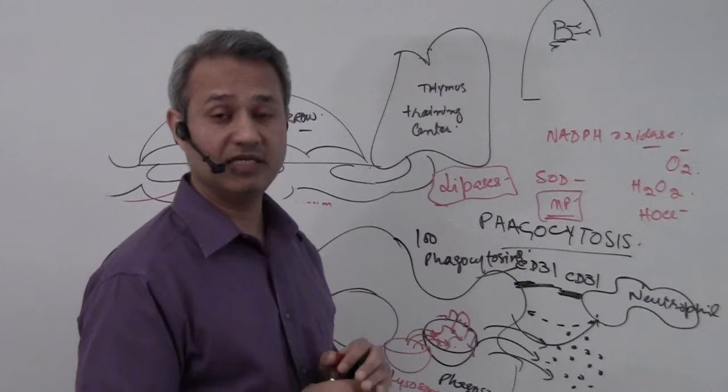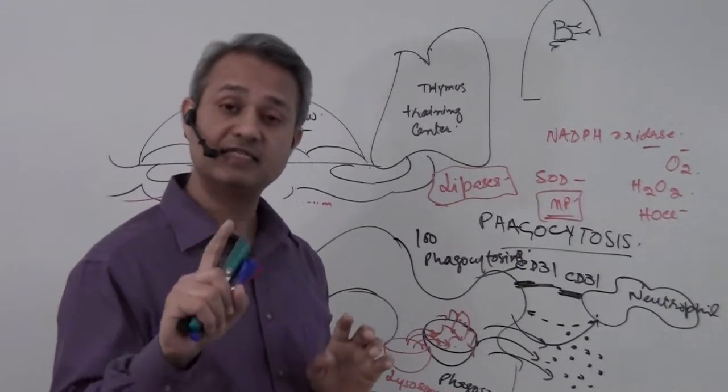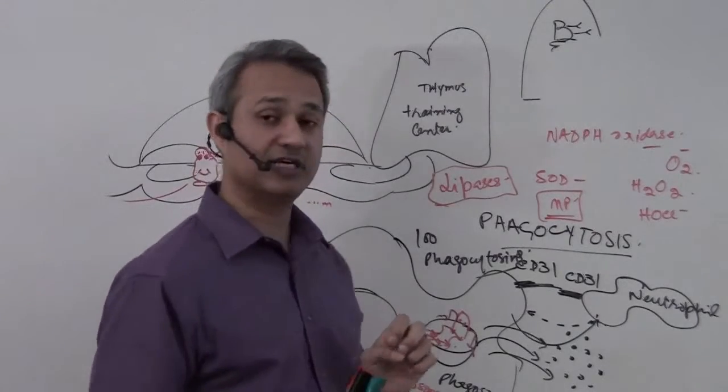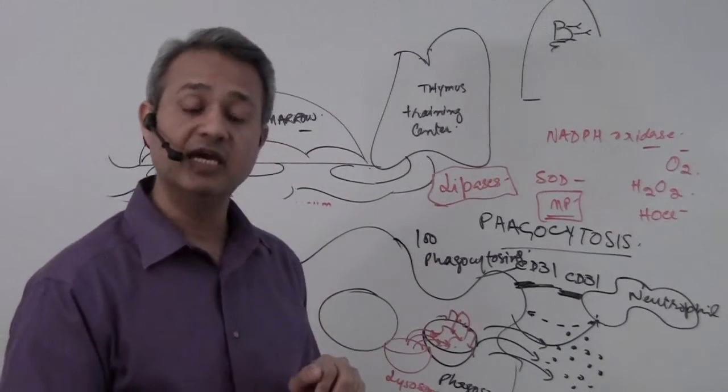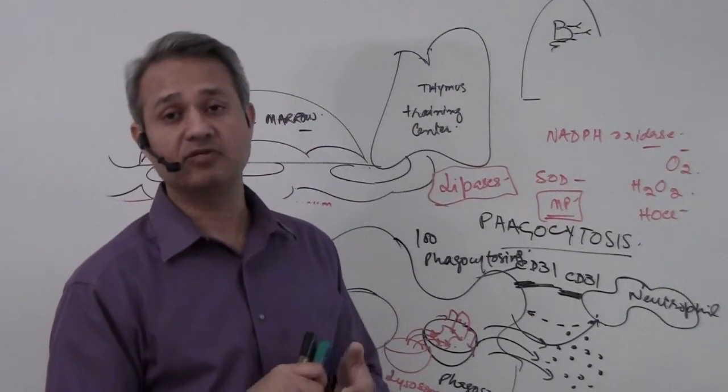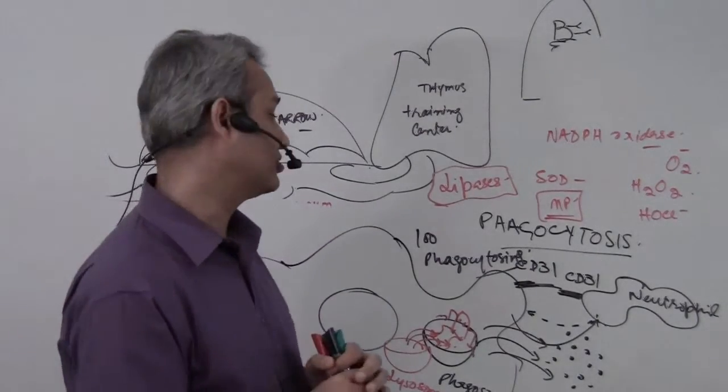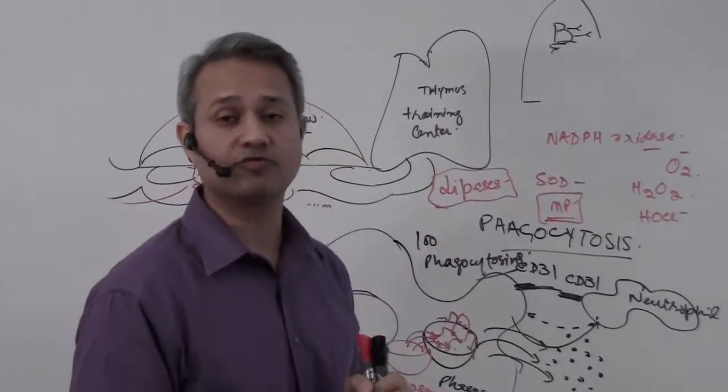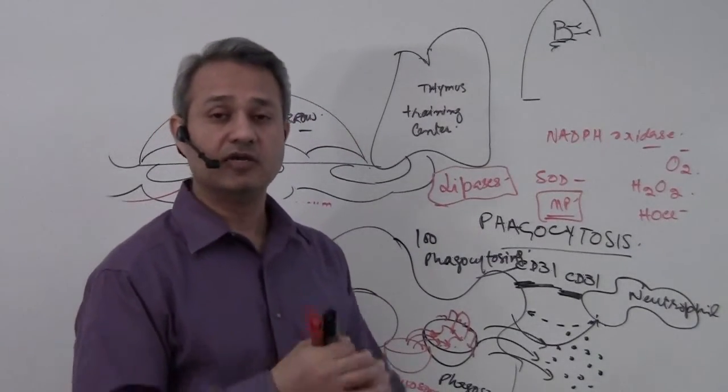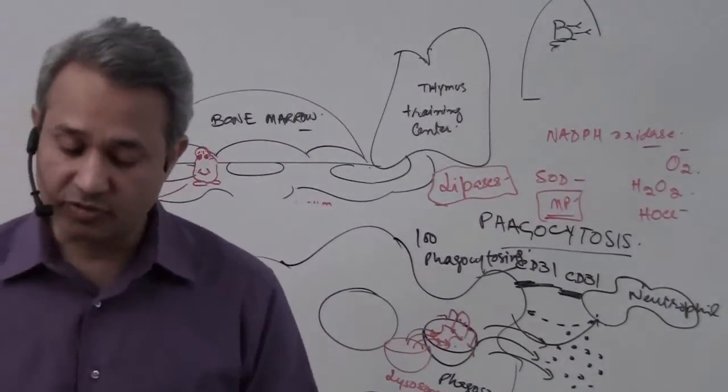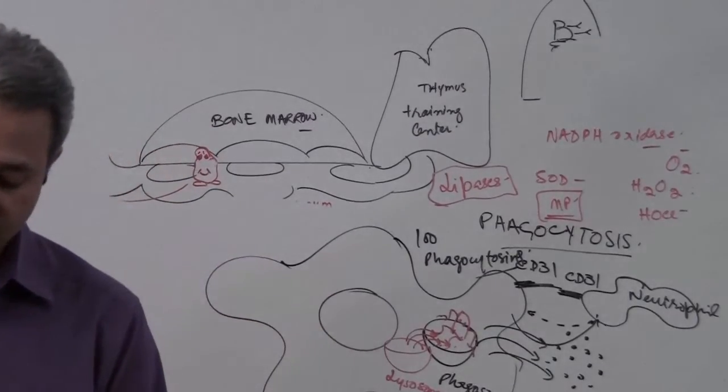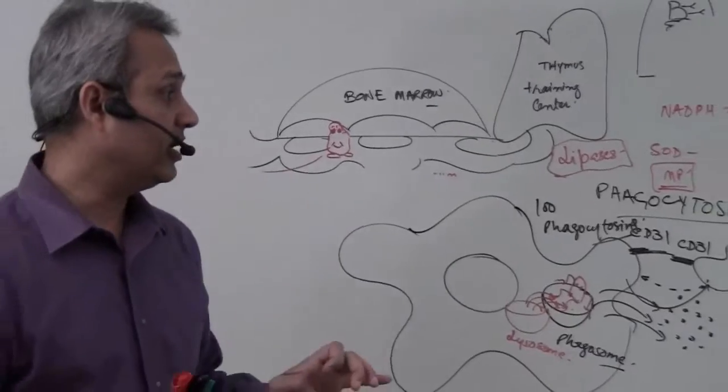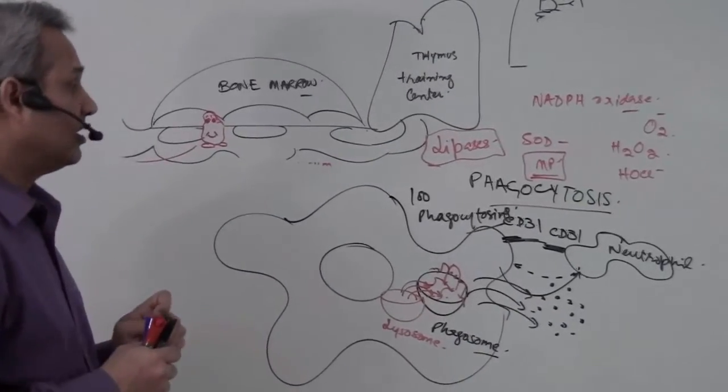Lipases are present in macrophages, which is why tuberculosis bacteria are handled inside macrophages. They have lipases that can break down the thick lipid membrane of mycobacterium tuberculosis. Lipases are not present in neutrophils, so they cannot handle it. Myeloperoxidases are present in neutrophils; lipases are not.